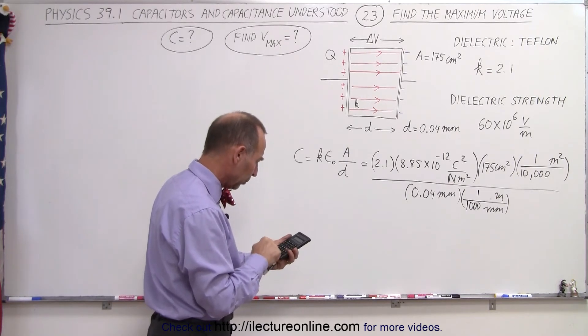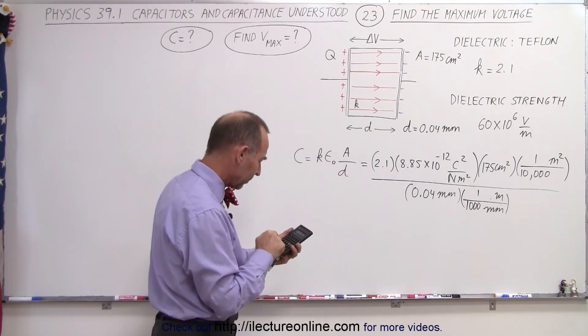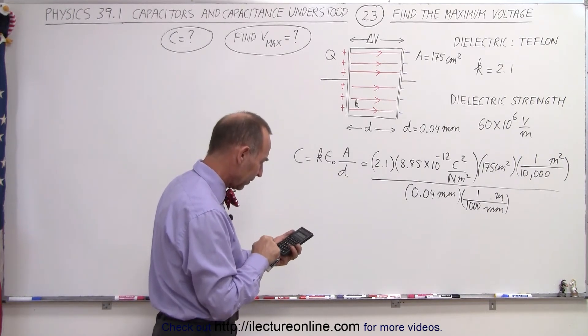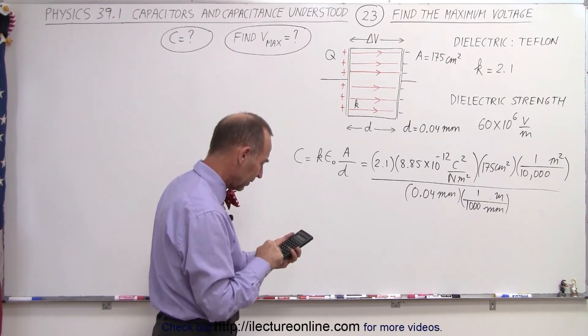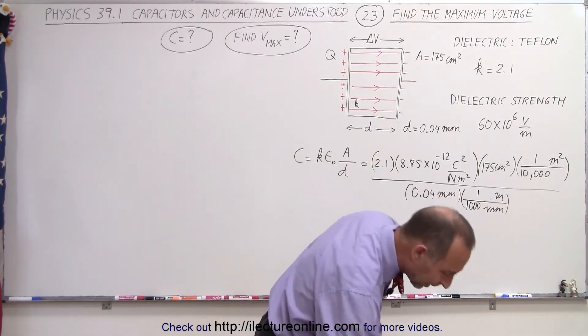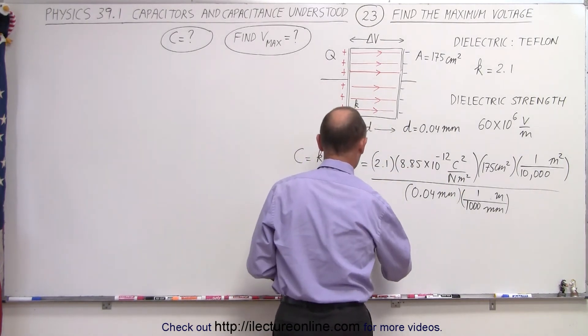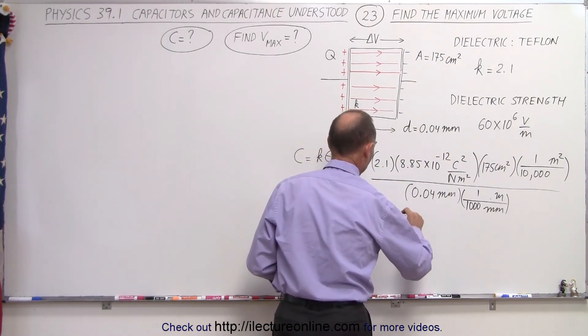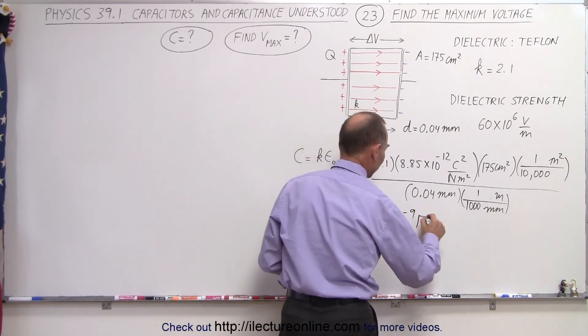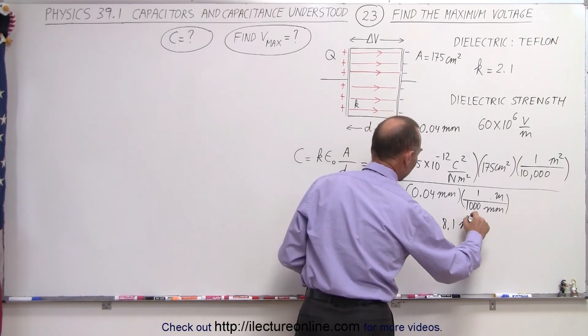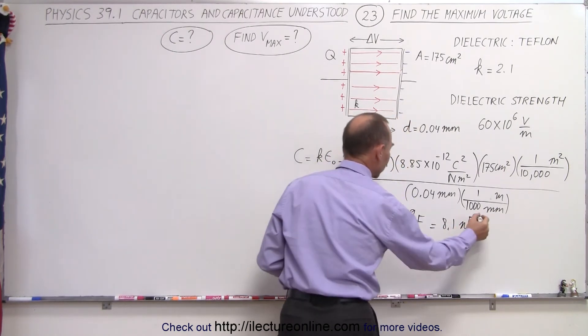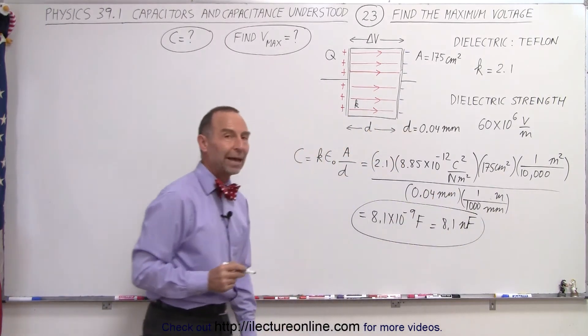2.1 times 8.85 e to the minus 12 times 175 divided by 10,000 equals, divide by 0.04 and then times 1,000, and we get basically 8.1 times 10 to the minus 9. So this is equal to 8.1 times 10 to the minus 9. And the unit in this case is going to be farads, which is equal to 8.1 nanofarads. So there's the capacitance of that capacitor.